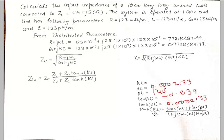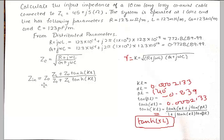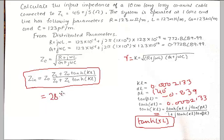Substituting these values, you get tanh(γl) — also written as tanh(kl) since gamma and k are the same thing, and our distance is 10 centimeters. Substituting the value of tanh(γl) into the final formula for a lossy transmission line gives the input impedance equal to 28.32 + j10.83 ohms at a distance of 10 centimeters from the load.